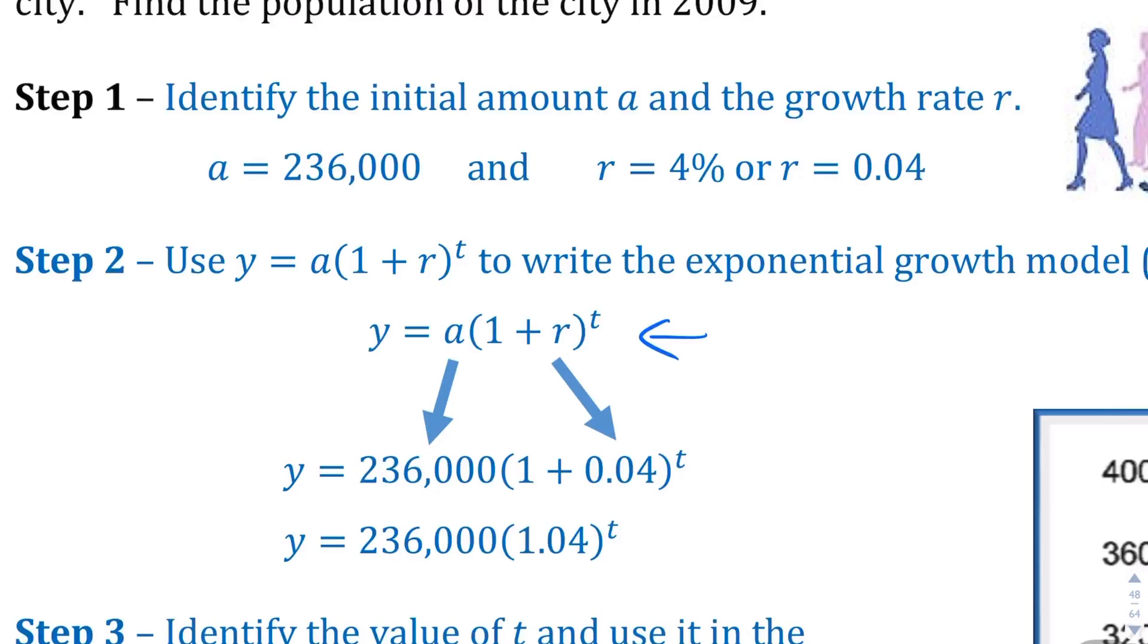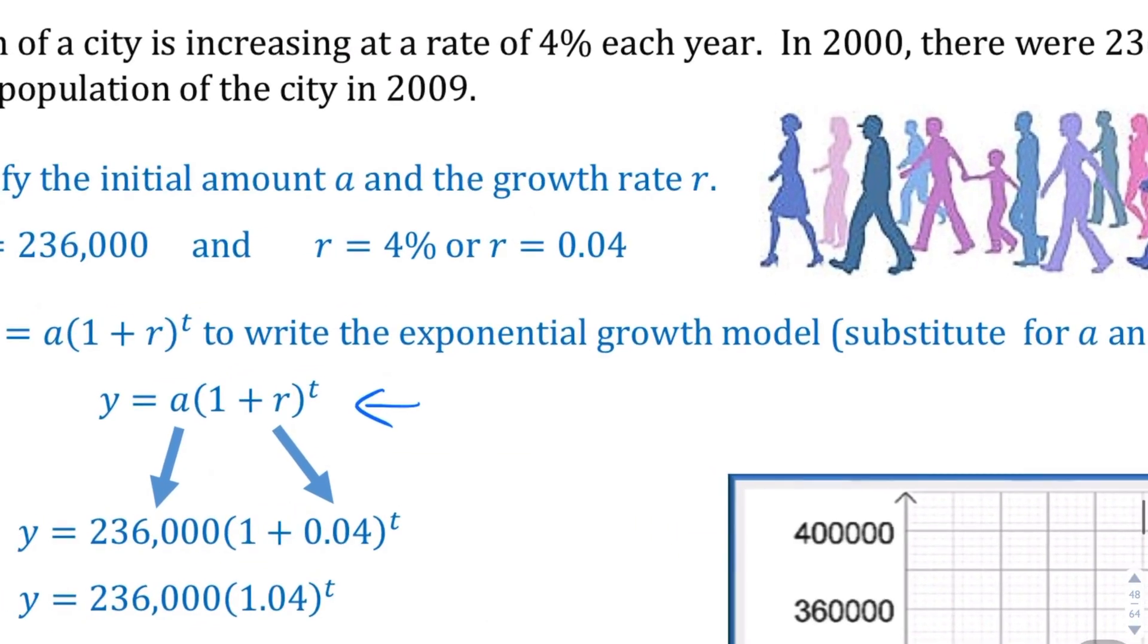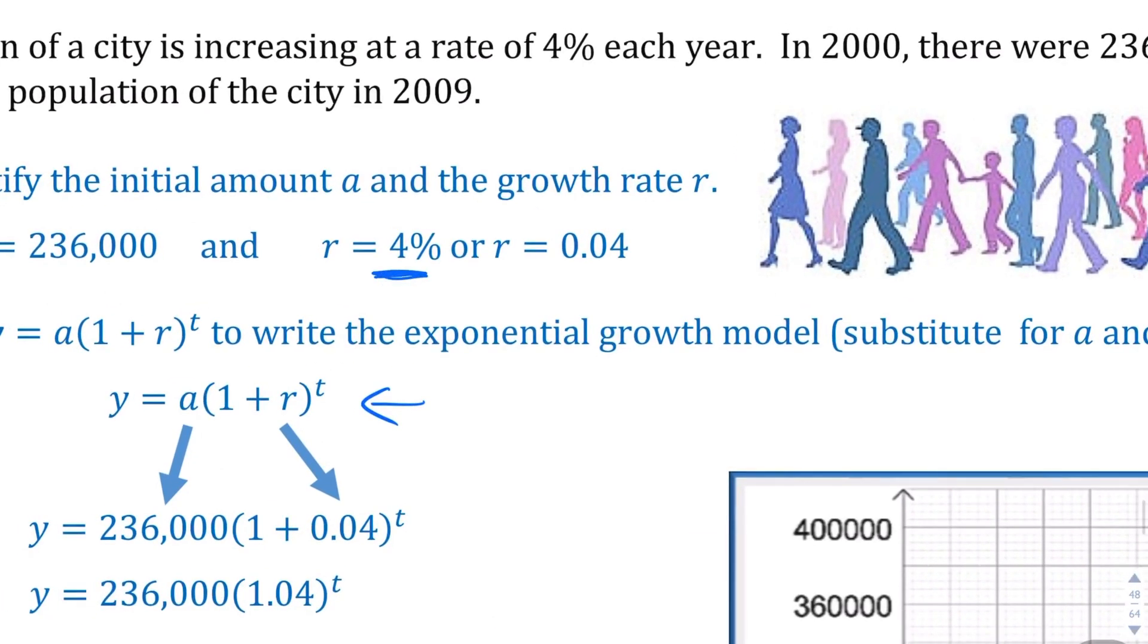y equals a times 1 plus r to the power of t, where a is our initial value, and then r is the rate, and t is the time. So we are quite fortunate because the problems will give us everything that we need. We'll have the a and the r and the t, and all you really have to do is be able to plug it in and maybe use some technology to help us fill out the table and graph. The only thing we have to keep in mind is that when we are given a rate, typically it's in terms of percentages. When it is, be sure to change it into a decimal before you plug it into the equation. You can't just plug in four, otherwise you'll get a radically different set of values.